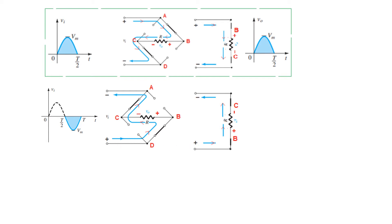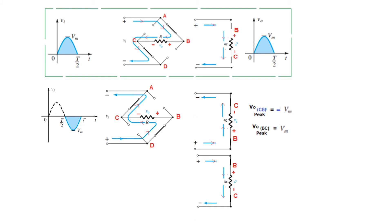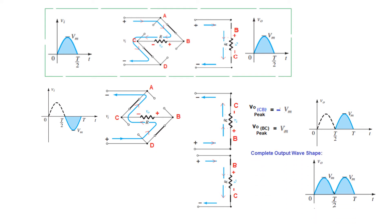That means if the output was positive in the positive half cycle, it should also be positive for the negative half cycle. The output redrawn shows current flowing with this terminal positive and this negative. We can write it as VCB, which is negative, but if we write it as VBC the minus sign goes away. So VBC equals plus Vm. If you flip the diagram you get positive at the top and negative at the bottom, confirming the output equals positive Vm for the second half cycle.